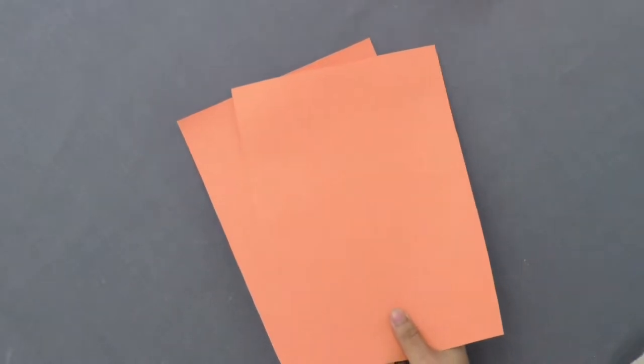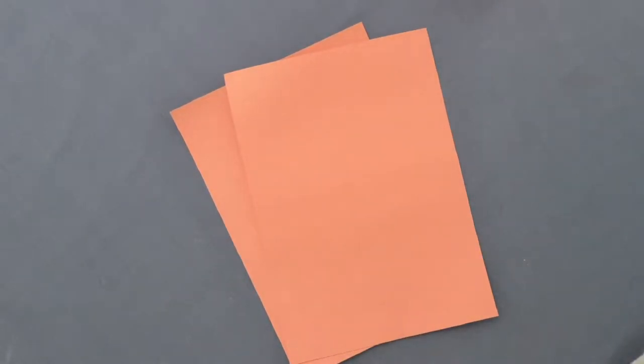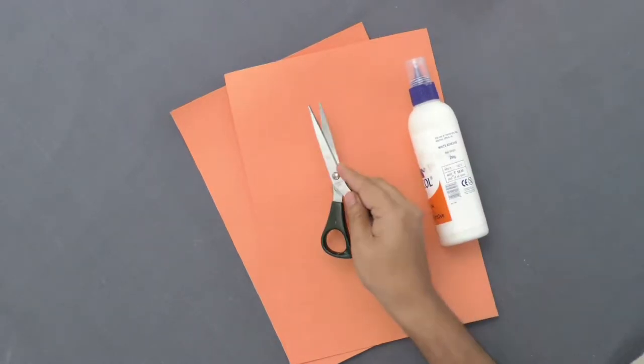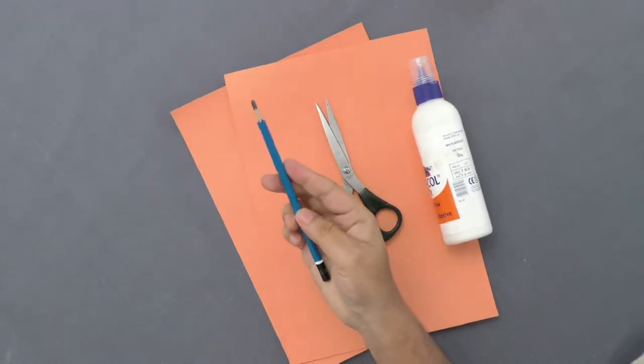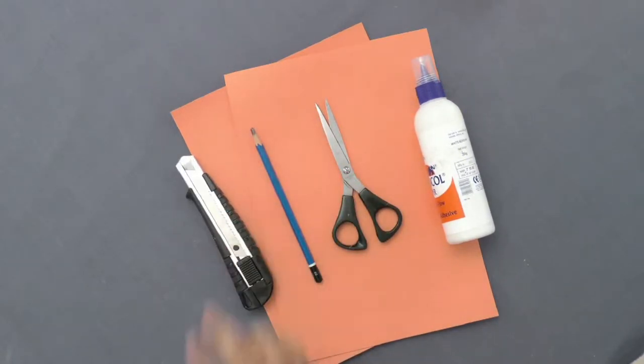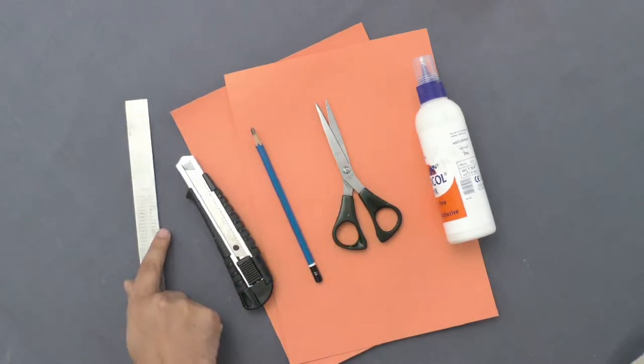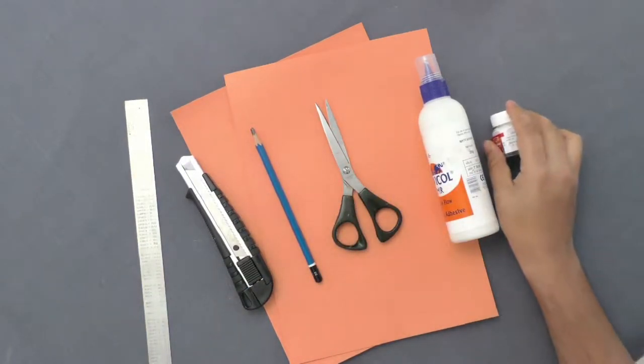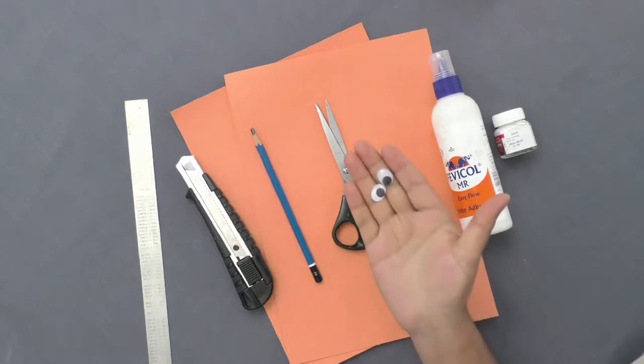Materials required: colored chart paper, adhesive, scissors, pencil, paper knife, scale, white fabric paint, googly eyes.